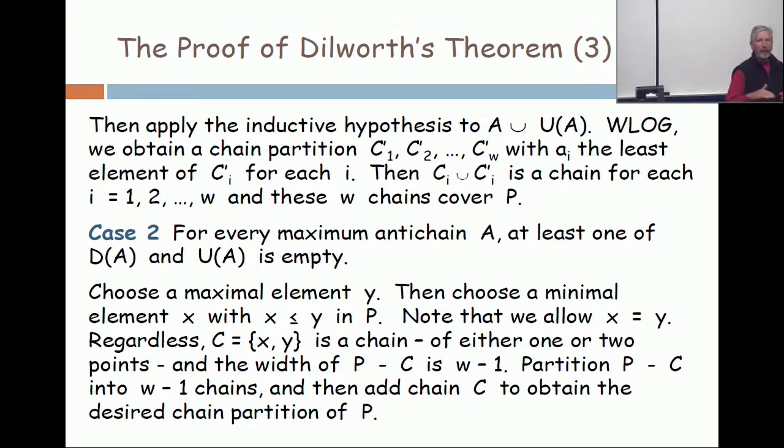Unlike, completely unlike the dual version, the dual version had explicitly a method: recursively strip off the minimal elements. There is no method in this argument whatsoever. The cases are about whether or not something exists without any emphasis on how one actually finds it or puts their hands on it.